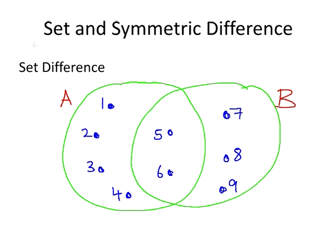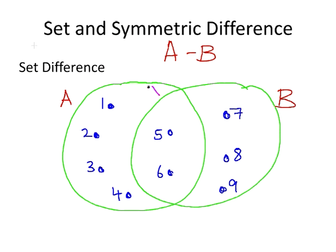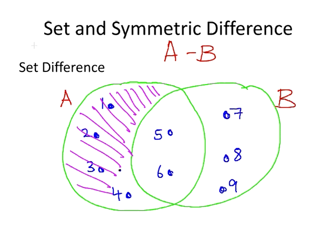Now the set difference of A minus B can be described as, or demonstrated as, we'll color it in magenta, this portion of the Venn diagram here. The elements of A that are in A only.